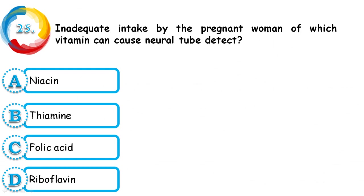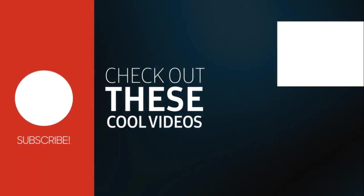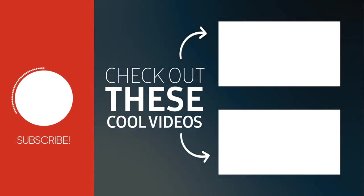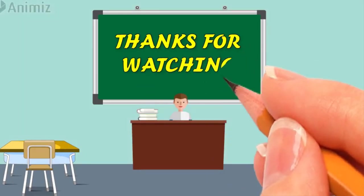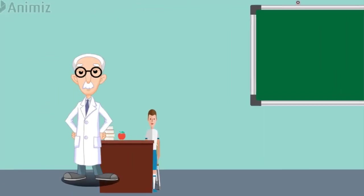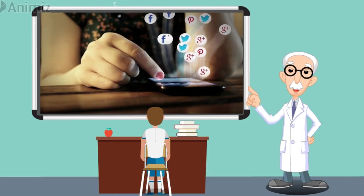Question 25: Inadequate intake by a pregnant woman of which vitamin can cause neural tube defects — niacin, thiamine, folic acid, or riboflavin? The correct answer is folic acid. Taking folic acid in the month prior to becoming pregnant and during the first three months of pregnancy reduces the risk of neural tube defects. I hope this video is helpful for your upcoming competitive examination — subscribe, like, share, and leave your comments!